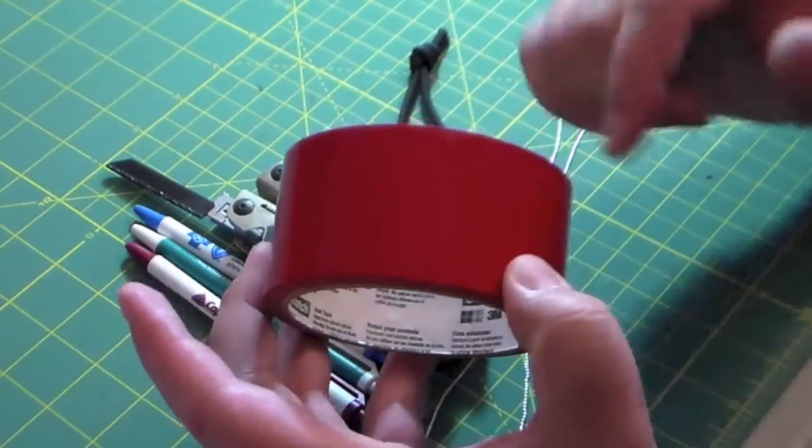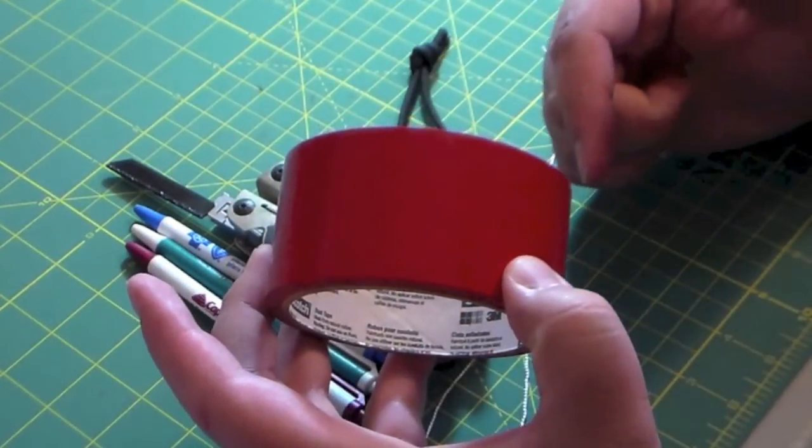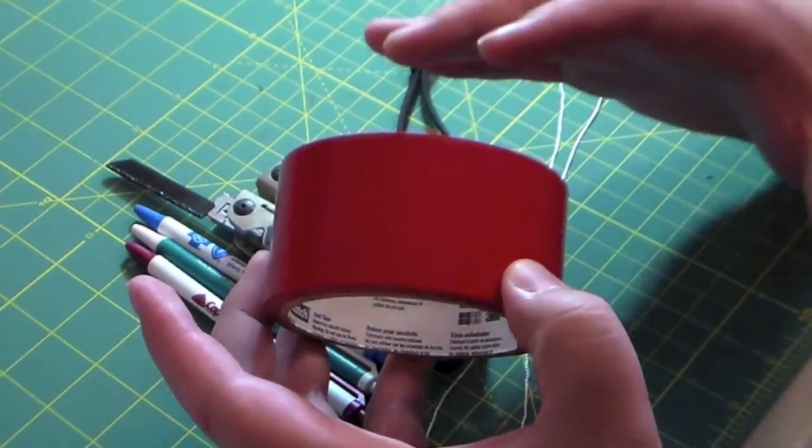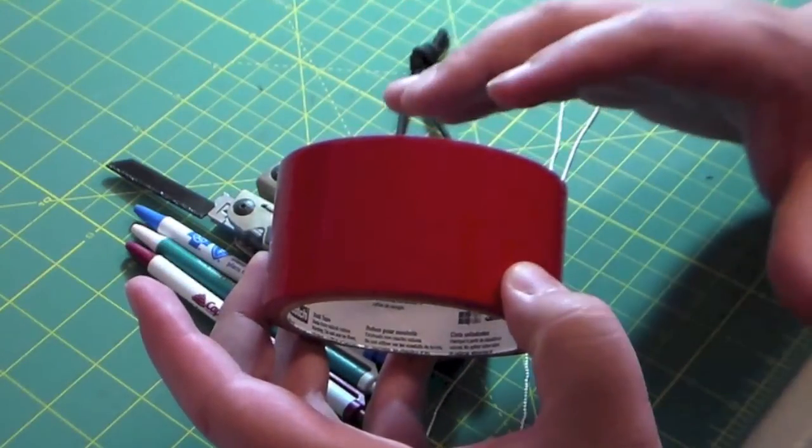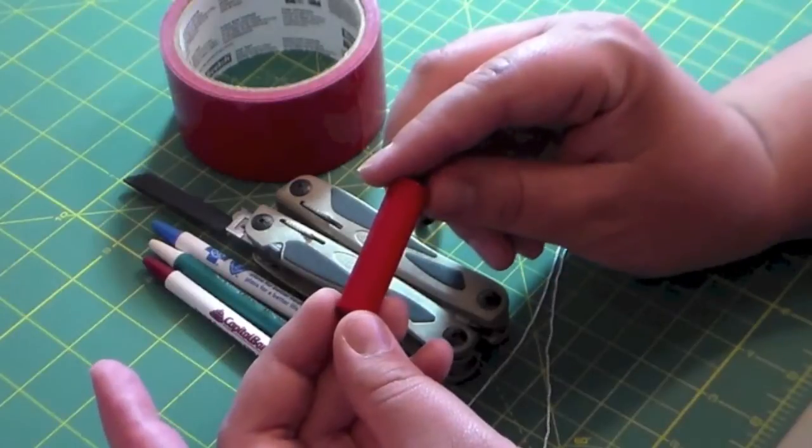then we're going to take duct tape and we're going to wrap around it. Now you can do as much or as little as you want, but I choose to do right around five feet. Now when you're done it should look something like this.